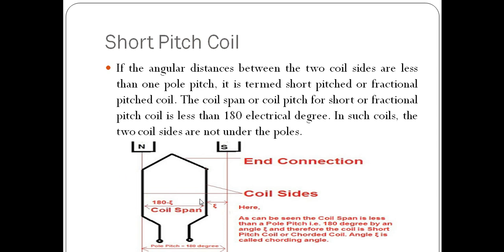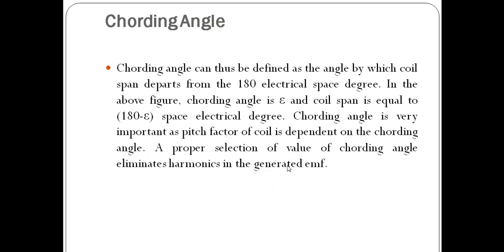Here you can see the coil span is departing from 180 degrees by some angle zeta. This angle zeta is known as the chording angle. This is the reason a short pitch coil is often known as a chorded coil. Chording angle can be defined as the angle by which the coil span departs from 180 electrical degrees. In the figure, the chording angle is zeta and the coil span is equal to 180 degrees minus zeta electrical degrees.